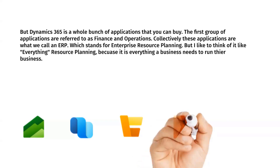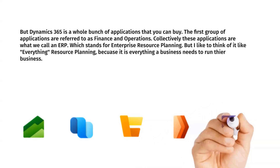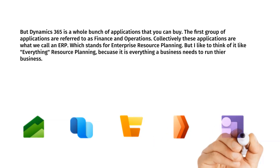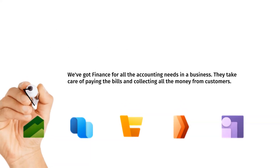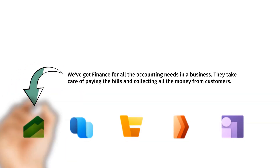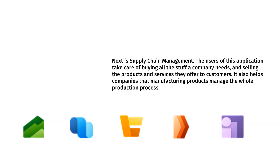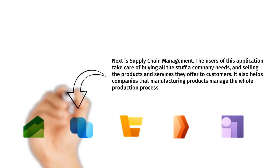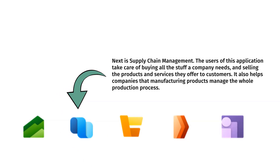Collectively, the Finance and Operations applications are what we call an ERP. ERP stands for Enterprise Resource Planning, but I like to think of it as Everything Resource Planning — because it is everything a business needs to run their organization. We've got Finance for all the accounting needs in a business — taking care of paying the bills and collecting money from customers. Next is Supply Chain Management, where users take care of buying all the stuff a company needs and selling the products and services they offer.